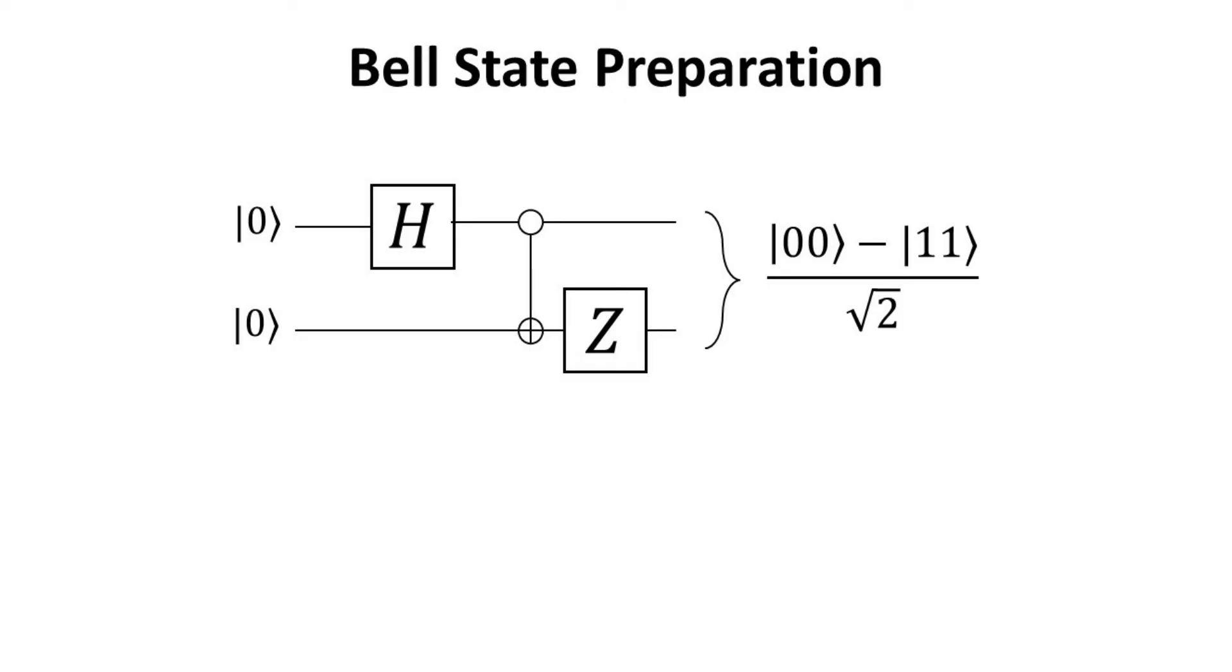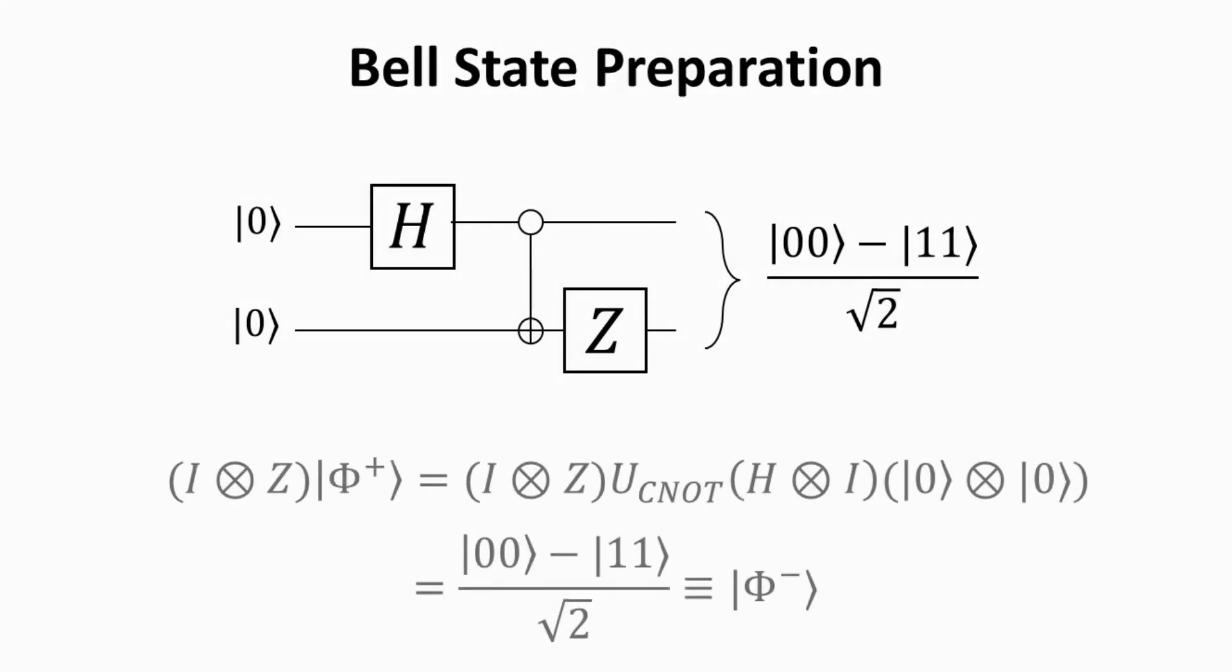Next, we show how the phi minus state can be obtained from the phi plus circuit by adding a Z gate to the second qubit. As we have seen in the previous video, the Z gate is one of the phase change gates. It applies a relative phase of pi between the basis states. This way, we can obtain the phi minus Bell State.